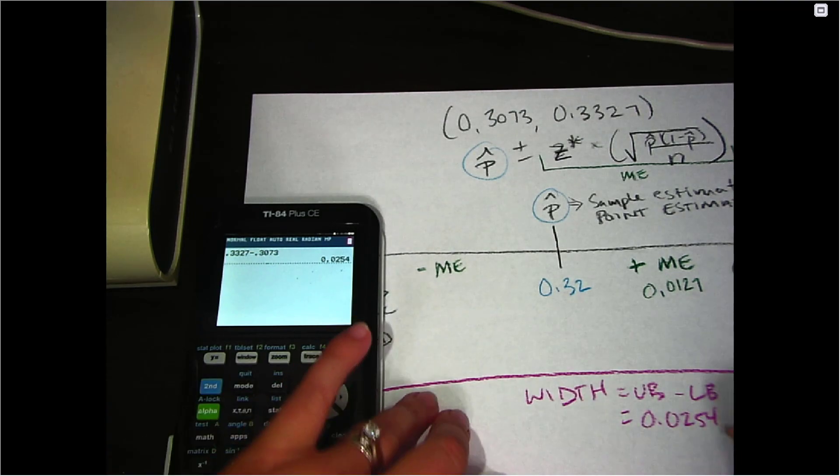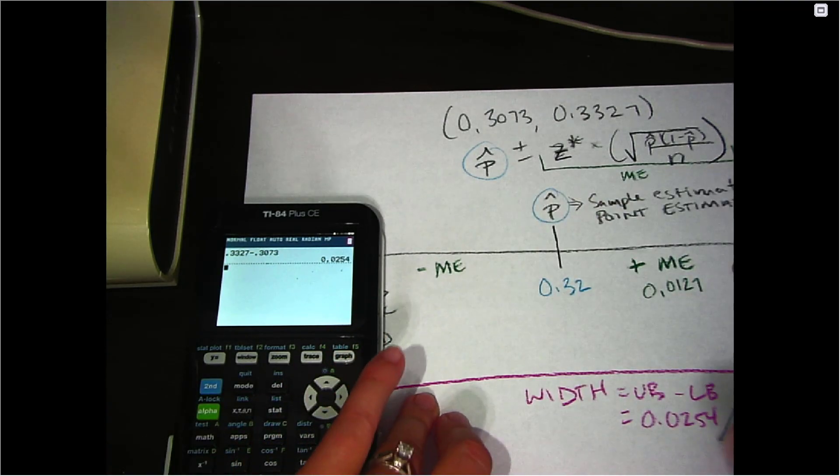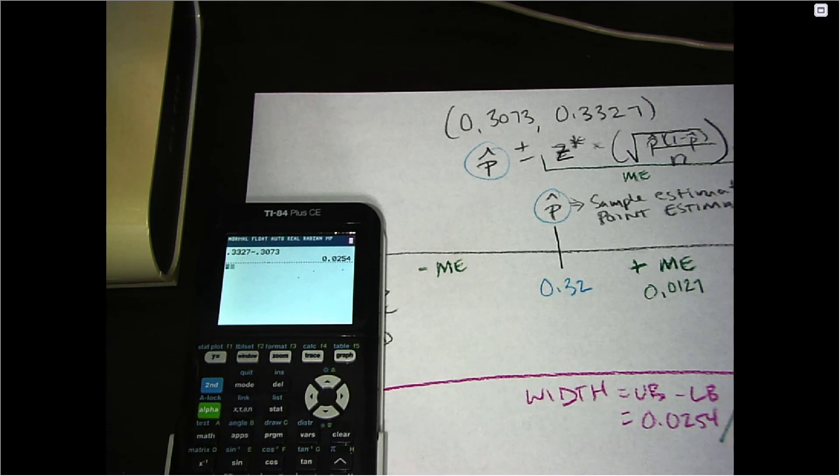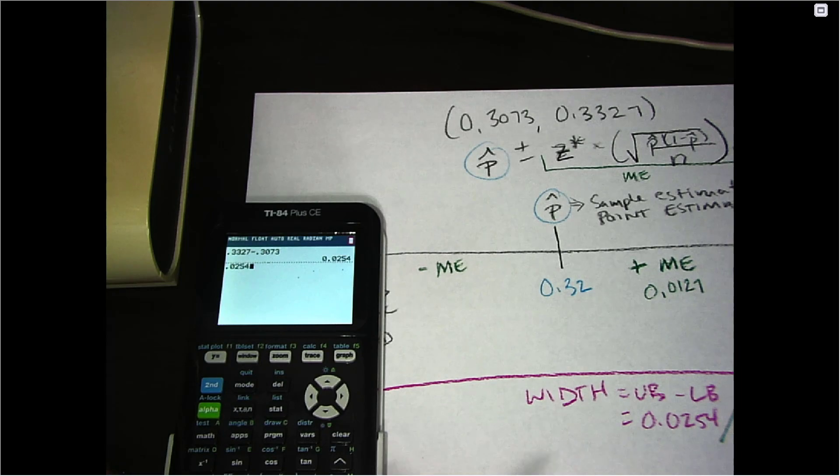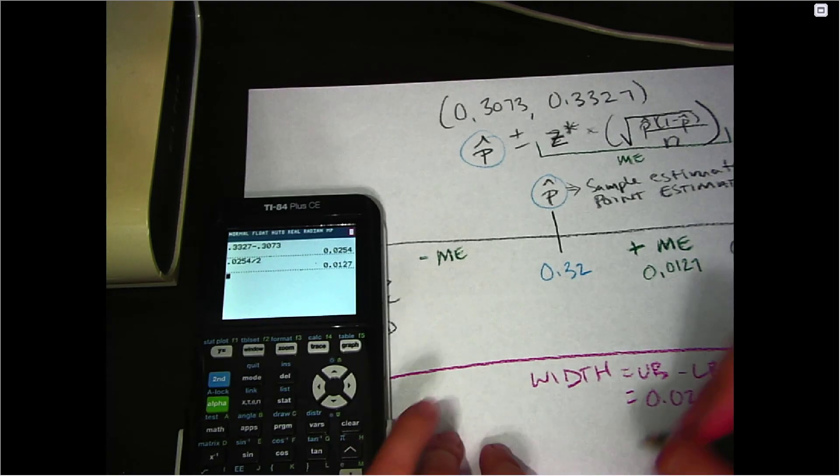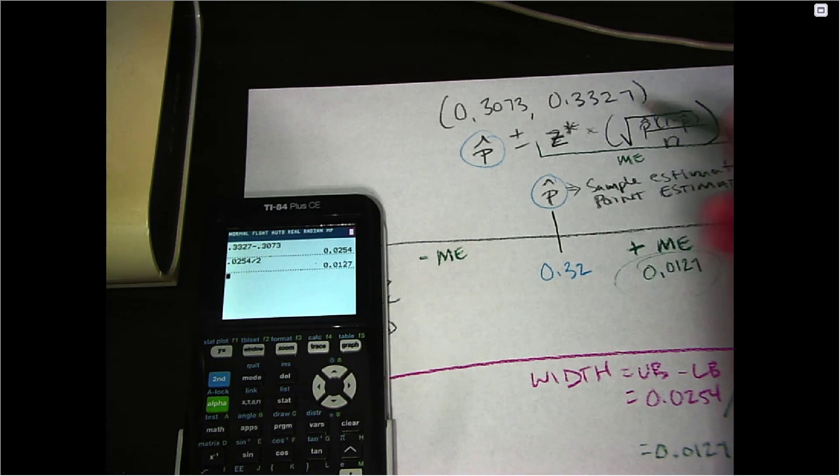And so if I were to take the width, which is the whole distance and just divide by two, I would find my margin of error. So 0.0254 divided by two, and I get 0.0127, which we verified up here because that's what we calculated when we were working forward.